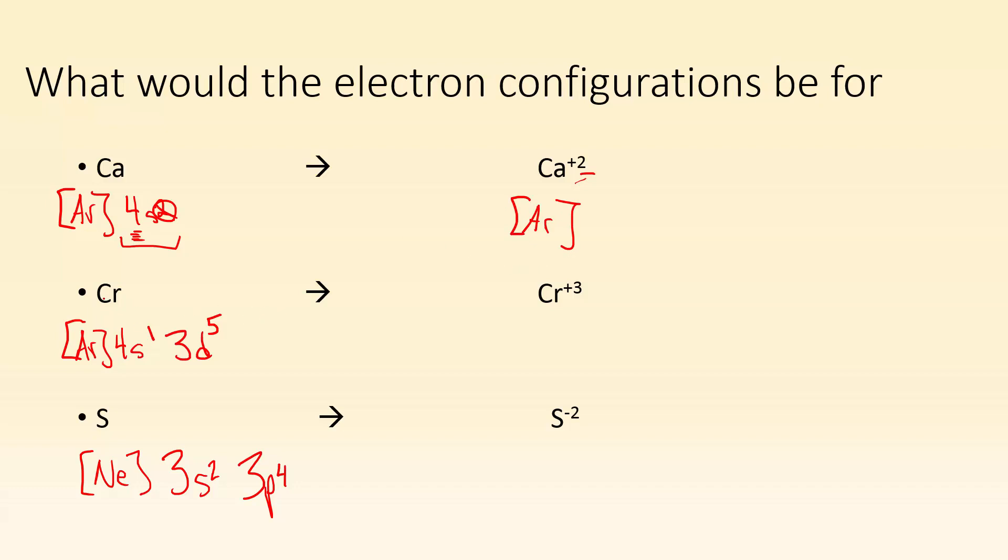Now, chromium, if I want to go from Cr0 to plus 3, I have to lose 3 electrons. Well, where am I going to lose them from first, the 4s1 or the 3d5? Well, if I'm losing electrons, I've got to go to the highest principal quantum number, which is 4. And I've got to lose that one first. So I lose one there. And then I still have two more to lose. So I end up with [Ar]. And then the 4s is completely gone. And I removed a couple from the 3d. So now I'm left with 3d3.